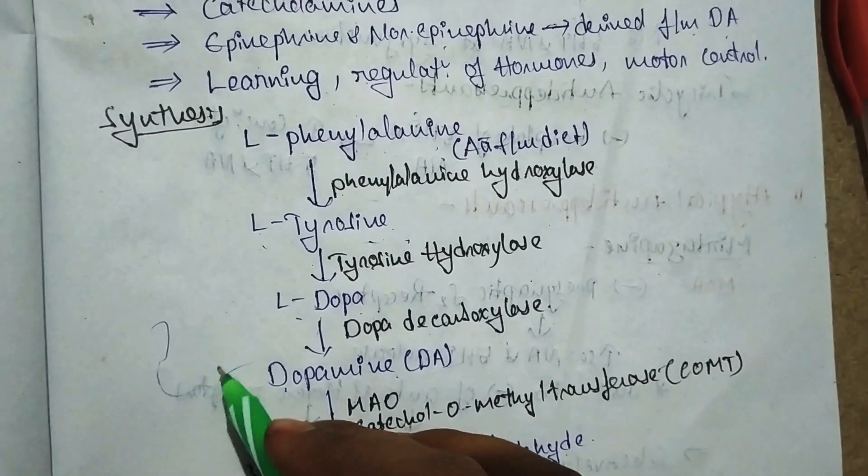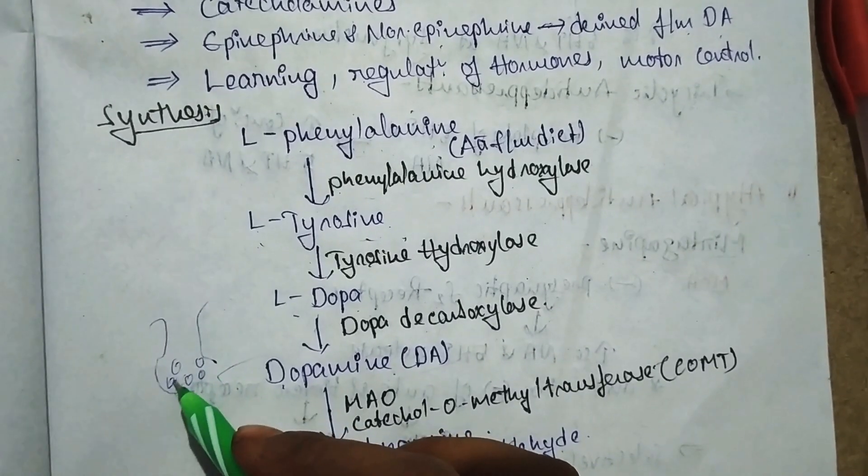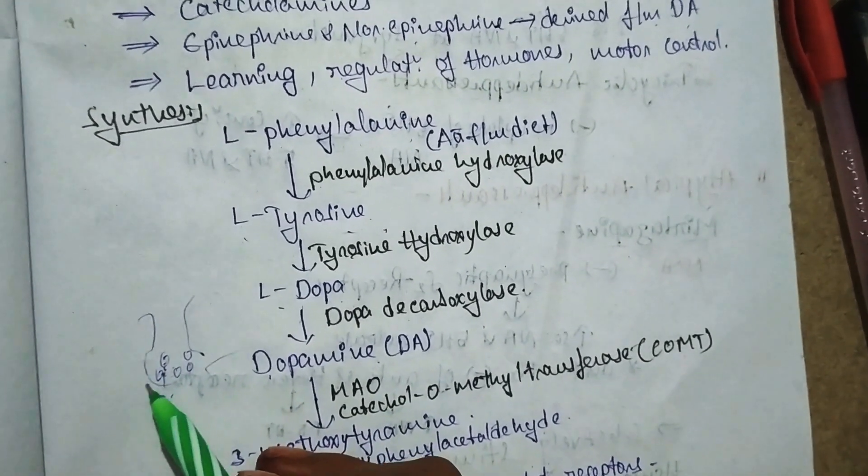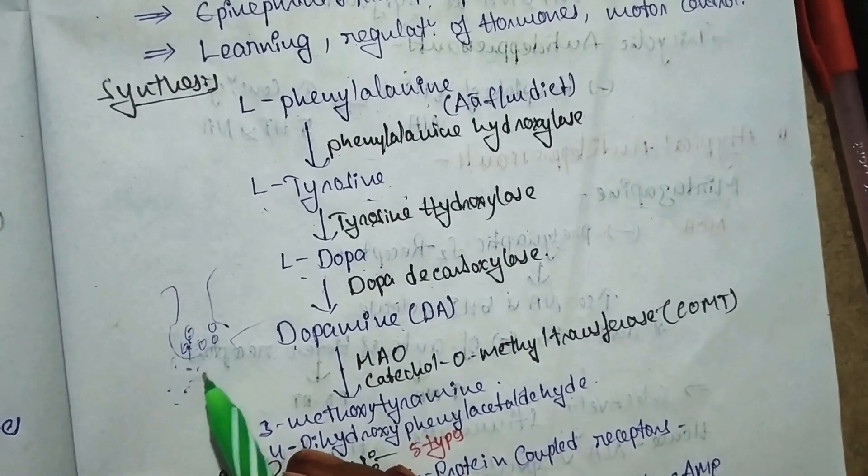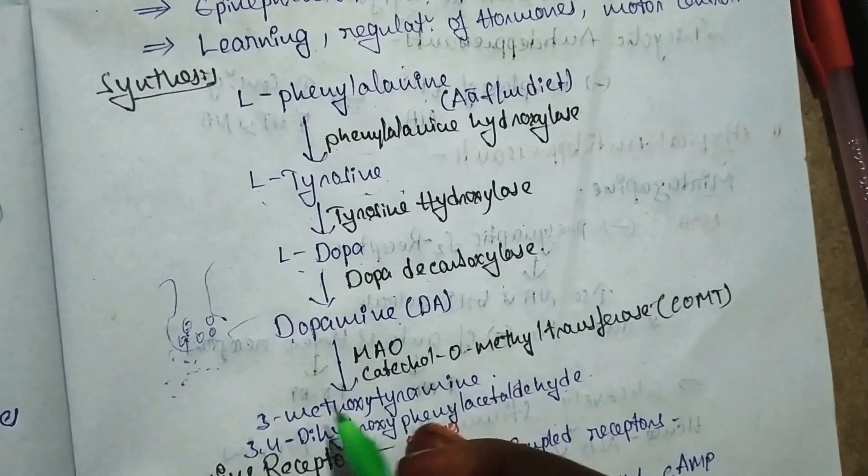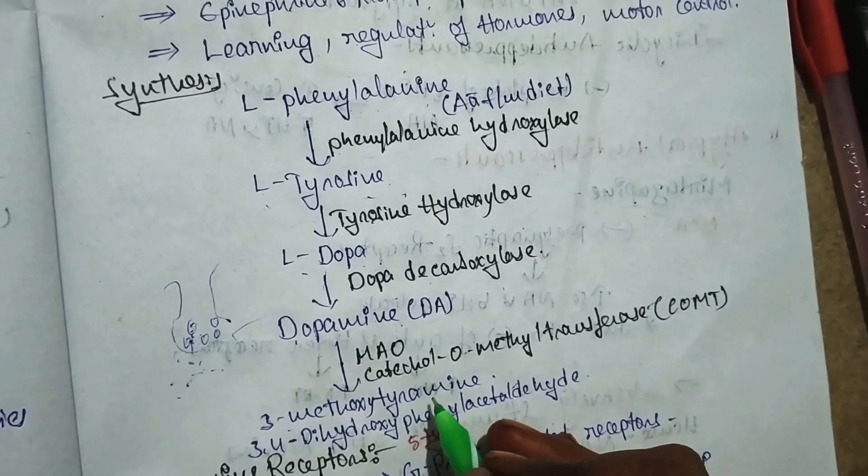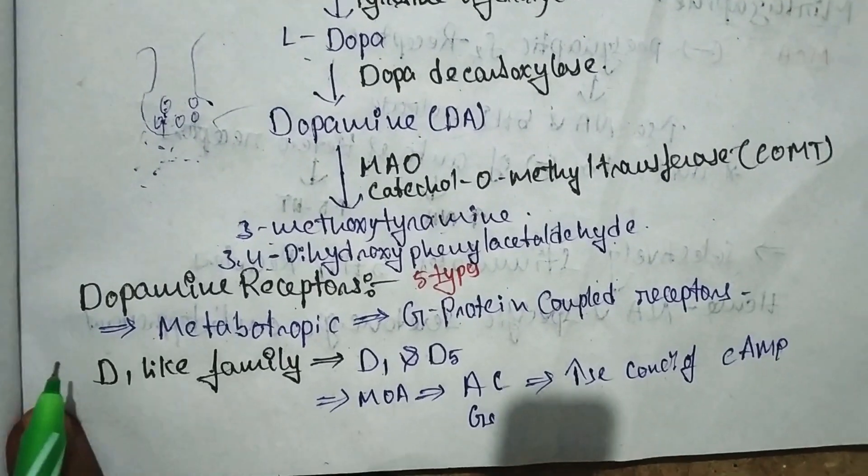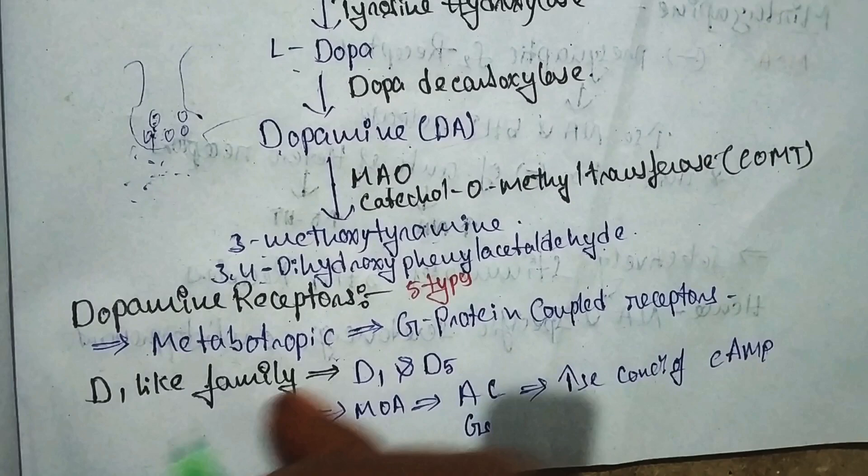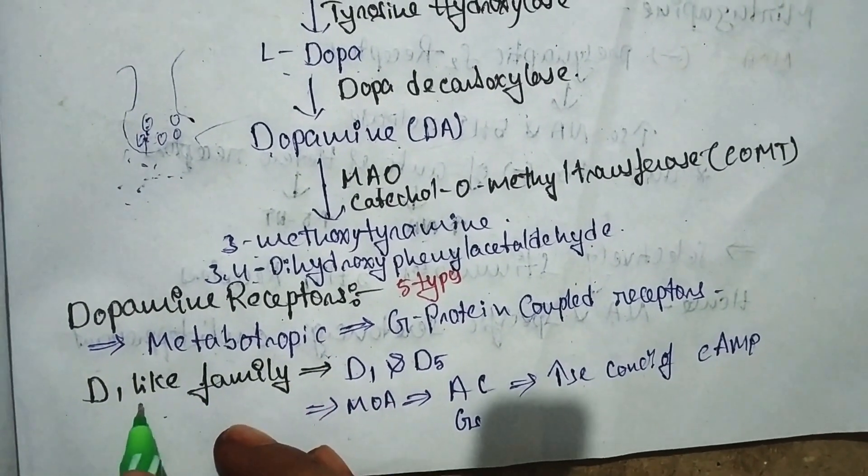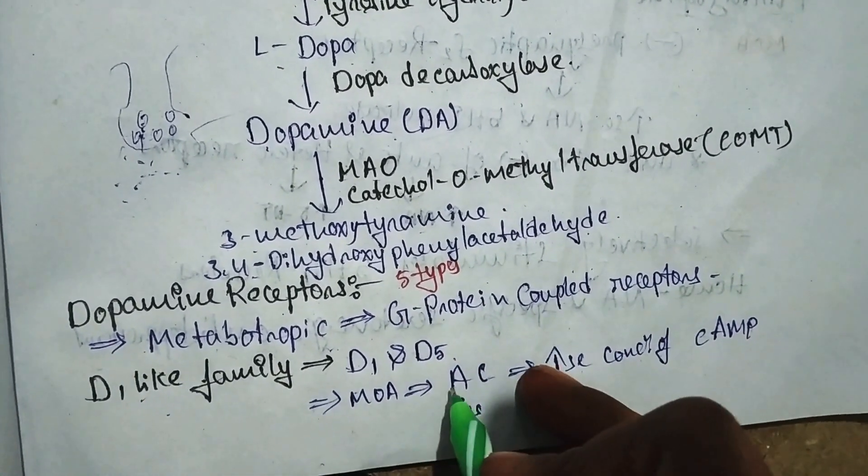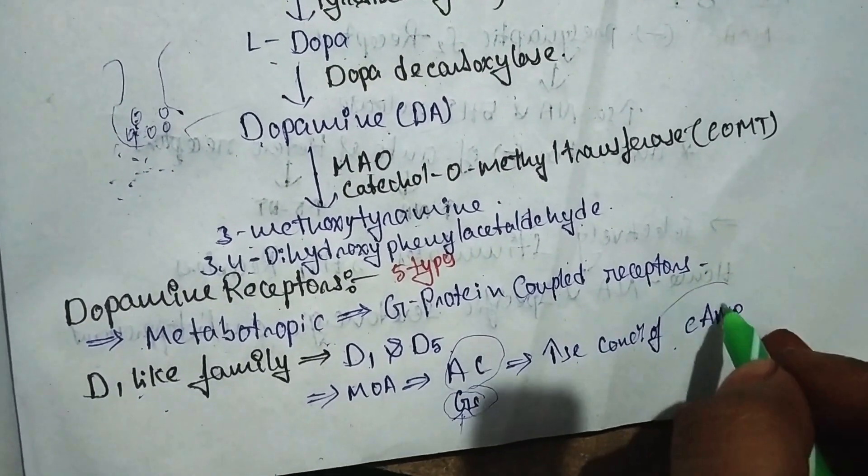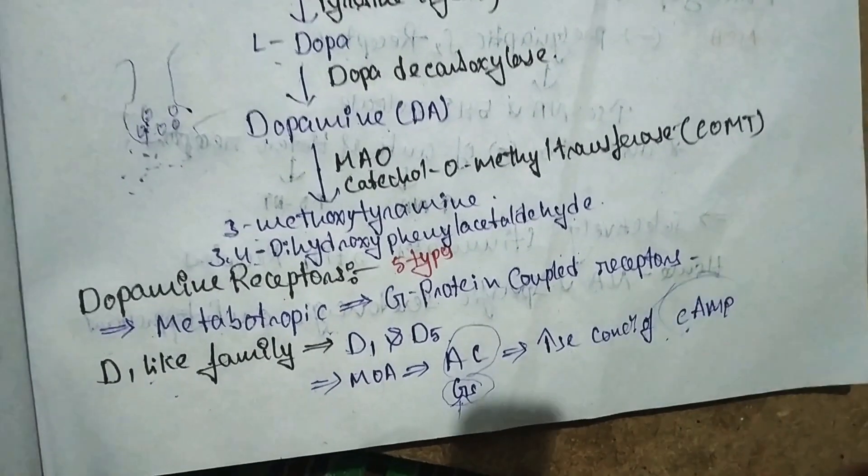Dopamine is stored in synaptic vesicles and released from the synaptic vesicles into the synaptic cleft. The released dopamine is degraded or metabolized in the presence of MAO, COMT, and GEMS, finally forming 3-methoxy tyramine and 3,4-dihydroxy phenylacetaldehyde. Dopamine receptors are of five types and are all metabotropic or G-protein coupled receptors: D1, D2, D3, D4, and D5. D1 and D5 follow the adenyl cyclase pathway with stimulatory Gs actions, increasing the concentration of cyclic AMP levels, which increases stimulatory effects.